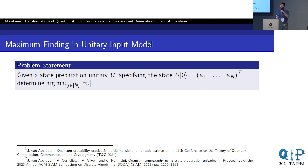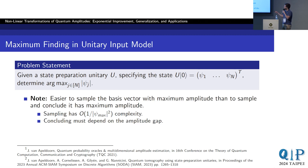The next application we show is maximum finding in the unitary input model. The problem statement: we have a state preparation unitary U which prepares some quantum state, and we want to find the basis vector associated with maximum amplitude. It's easier to sample the basis vector with maximum amplitude than it is to conclude that it is the basis vector with maximum amplitude. Sampling occurs with probability equal to the norm squared of that basis vector. But concluding must depend on the gap between the largest and second-largest amplitudes — for example, consider a nearly uniform superposition over two basis vectors where both amplitudes are very close but not exactly equal.